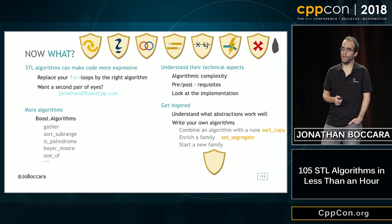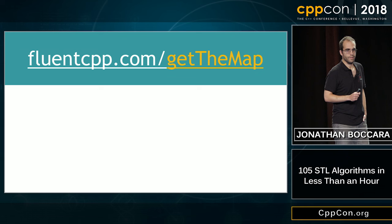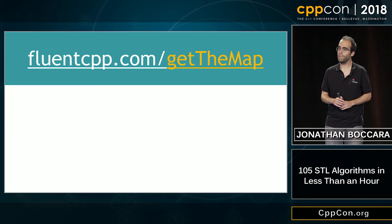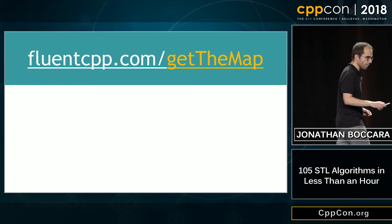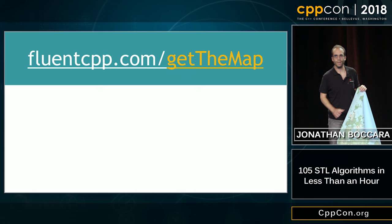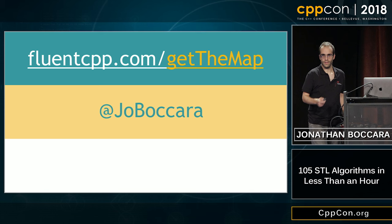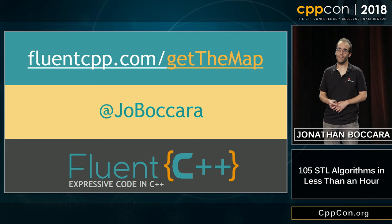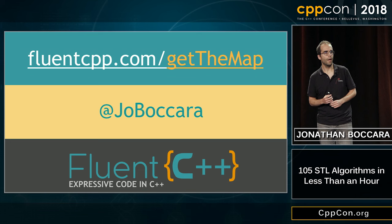Once you're familiar enough, you can start thinking about writing your own algorithms — combining an existing algorithm with an existing rune to create a new combination, like sort_copy which doesn't exist, or adding something new to the map. If you'd like to get the map, you can download it at fluentcpp.com/get-the-map — and you can also order a poster to hang in your home or office. You can find me on Twitter at @jbcobra, and if you're interested in reading about the STL or expressive code in general, check out fluentcpp.com with a new post every Tuesday and Friday. Thanks!